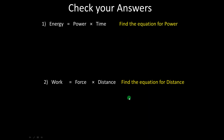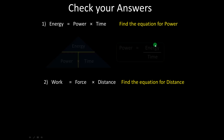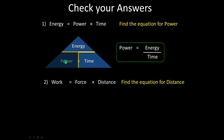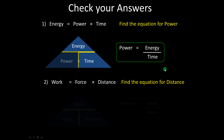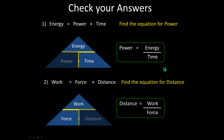For the first question, energy equals power times time — find the equation for power. Power and time go on the bottom of the triangle; we blank out power, leaving energy divided by time. So power equals energy divided by time. For the second question, work equals force times distance — it's a multiply type, so force times distance goes on the bottom. Blanking out distance gives us work divided by force.